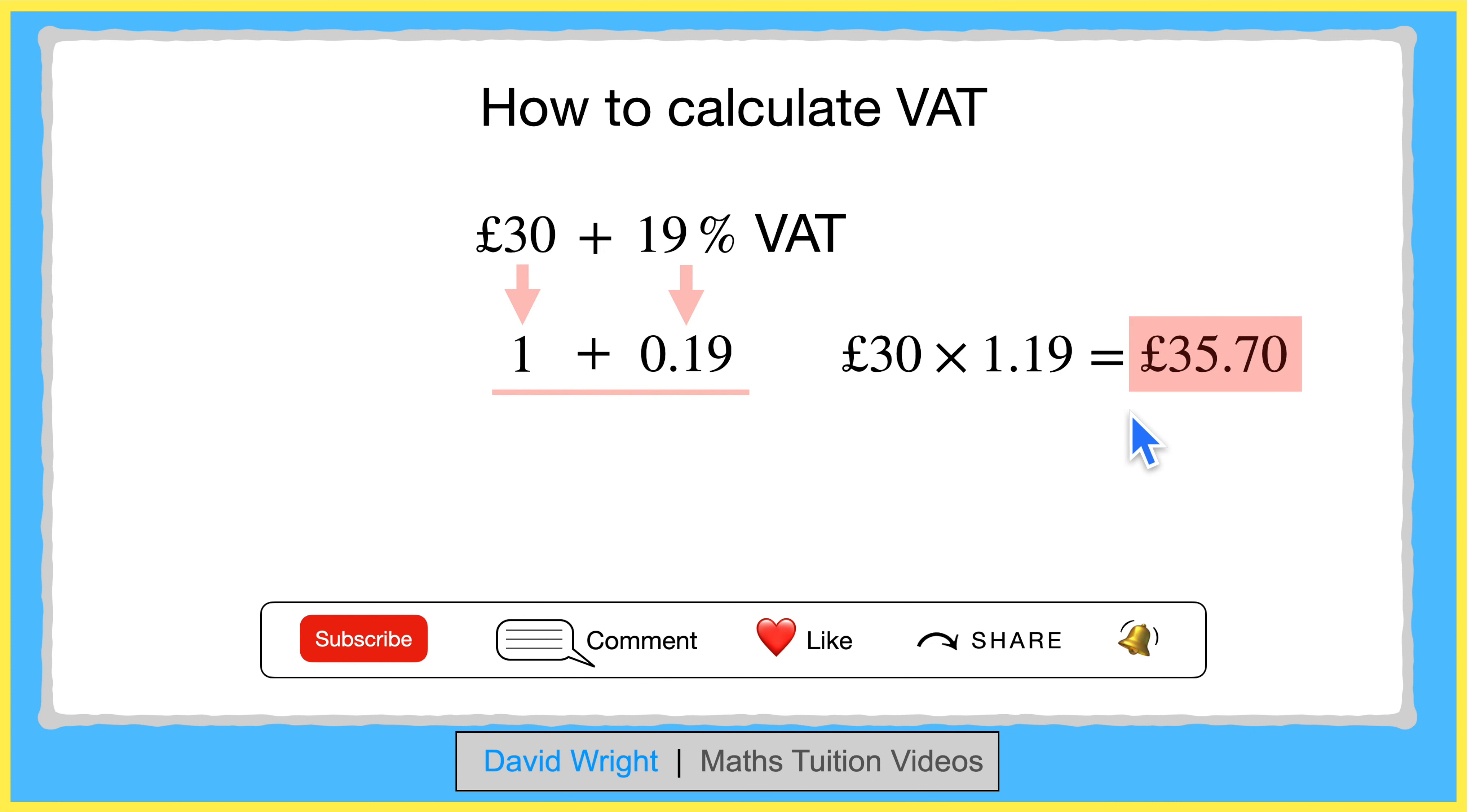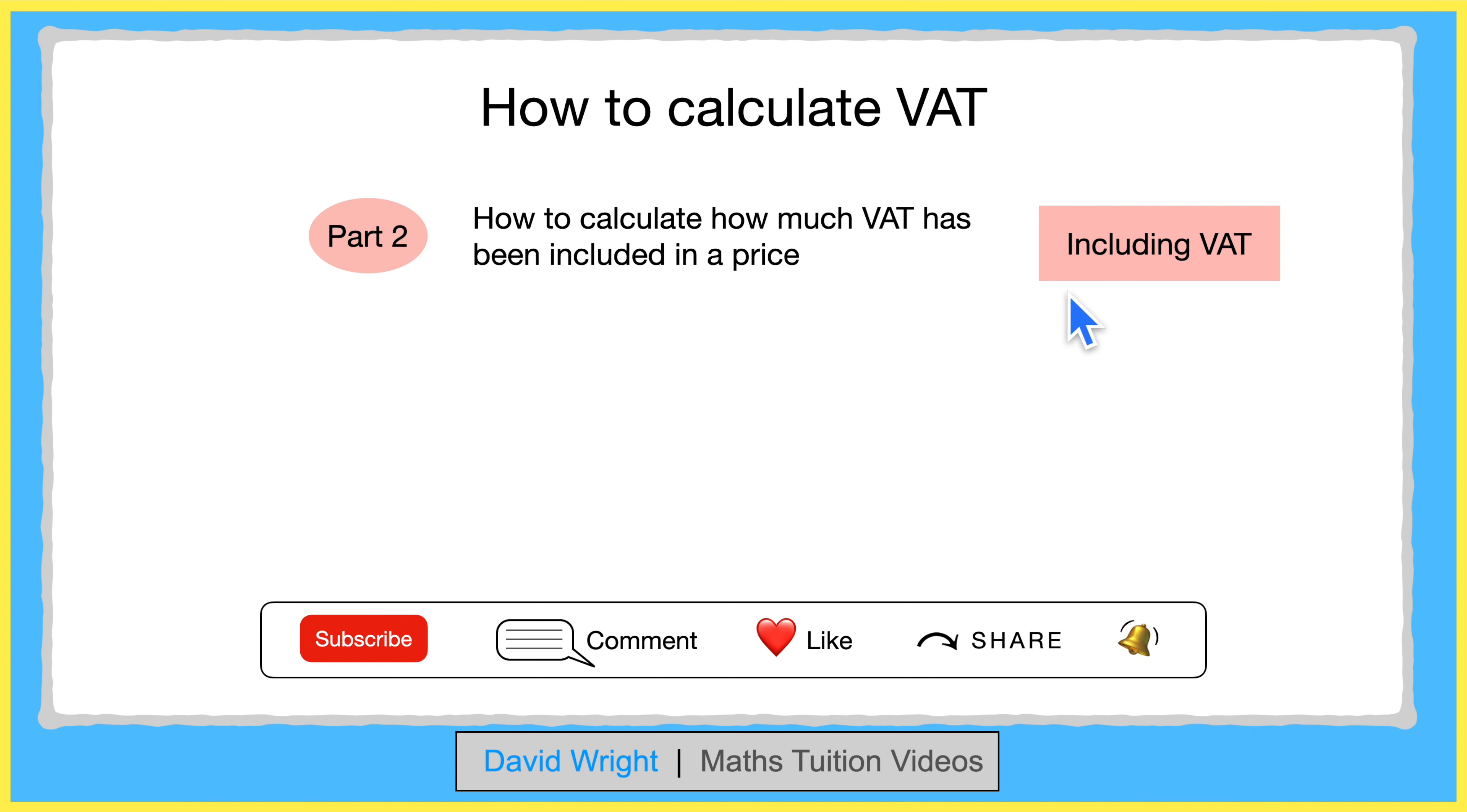Part 2 is about how to calculate how much VAT has already been included in a price. This time, we'll take a price of $59.50, which already includes 19% VAT. And we want to find the original price.